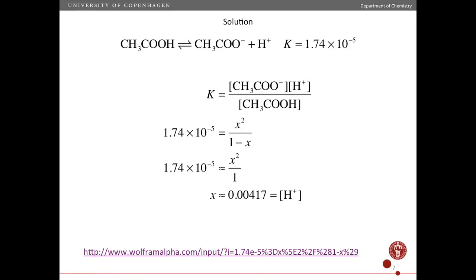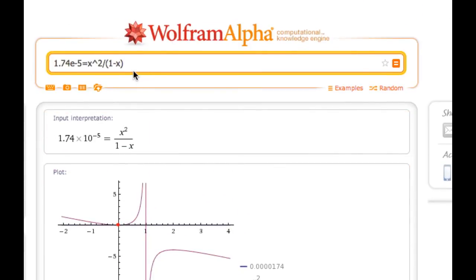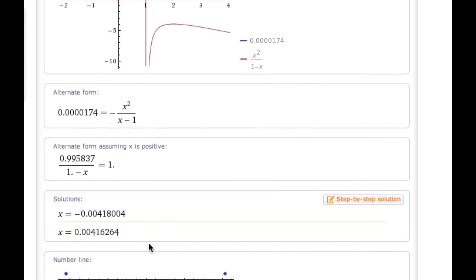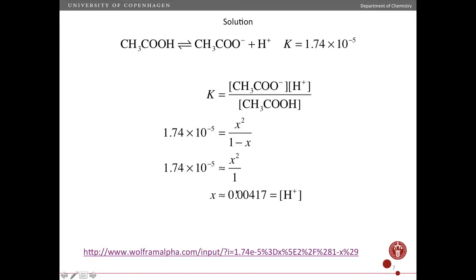If we don't want to make the approximation, then we have a quadratic equation to solve. And there are many ways of solving this. One very easy way is Wolfram Alpha. I have the link down here. And so what I've done here is I've typed in the equation, which comes out like this. And Wolfram Alpha automatically solves it. There's two solutions, right? But one is negative. That does not make sense. A negative concentration. So it has to be this answer here. 0.00416, right? Which is very close to the answer you get if you make this approximation. 0.00416, right?